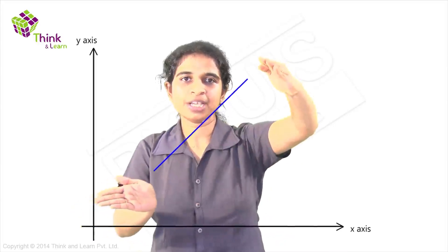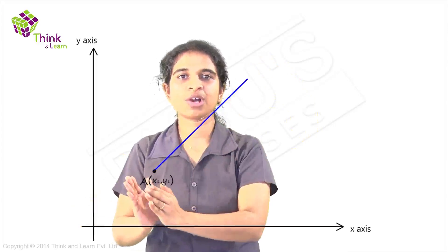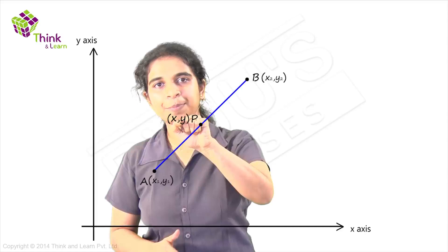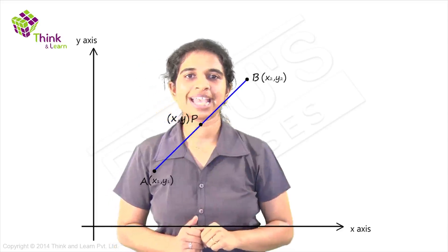Let me take the same points once again. You have this line AB, coordinates of A are x1, y1, coordinates of B are x2, y2. You have a point P which has coordinates x, y.